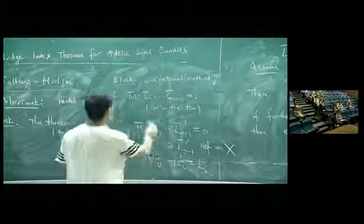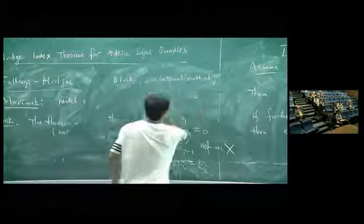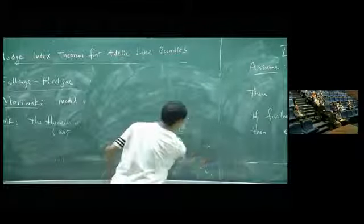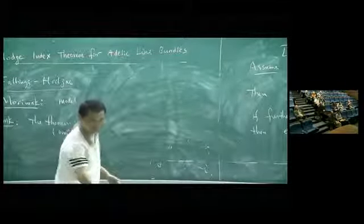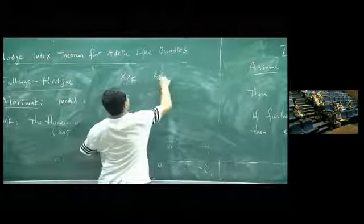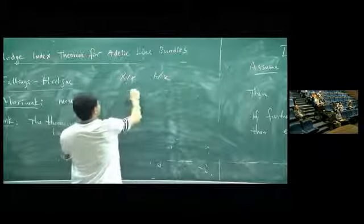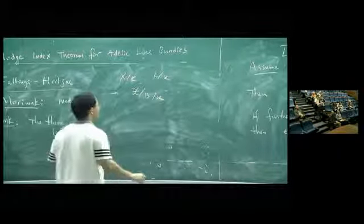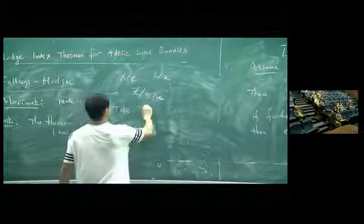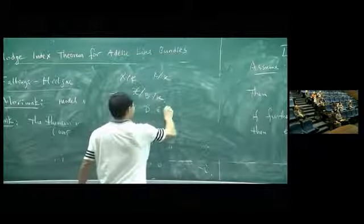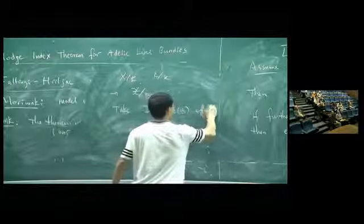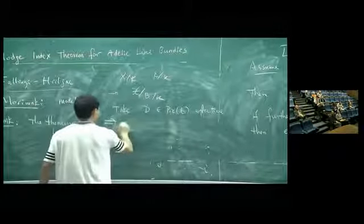So maybe, let me write here. Okay, you take one model and divisor. So, we have x over k, k over k. Now, we get x over b over k. Now, we take this b, inside the table b, effective. Then, we get a completion.